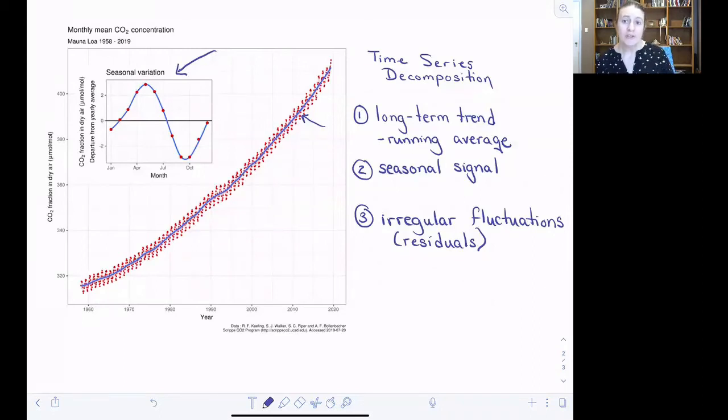As we talked about earlier, the first step in a time series decomposition is to calculate that long-term trend in your data. In the CO2 data that I'm showing you again here, what really pops out is that linear-ish long-term trend.